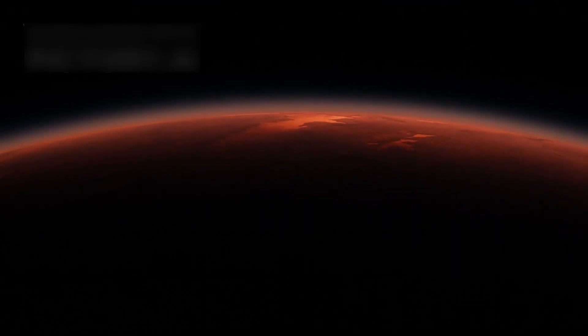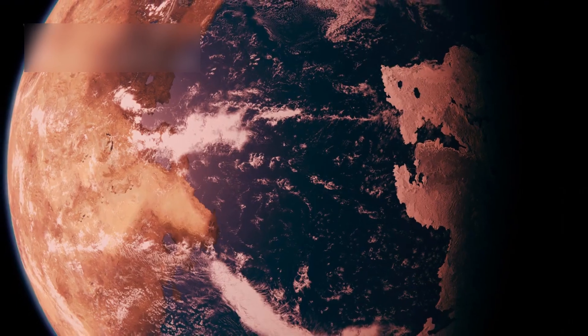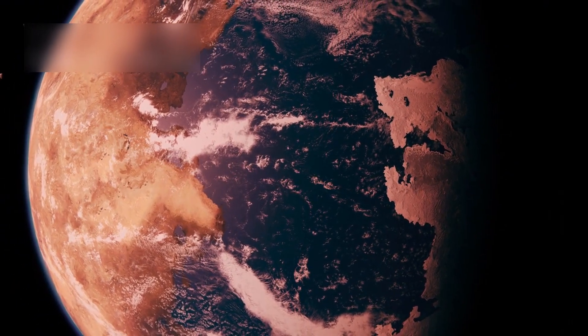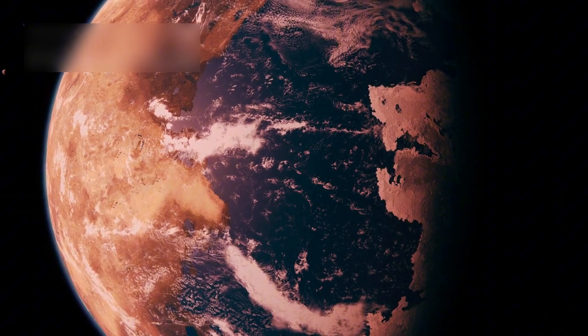JWST studied TRAPPIST-1, a red dwarf star with seven Earth-sized planets, changing how we see exoplanets. Three of these planets are in the habitable zone, where liquid water could exist and life might thrive.